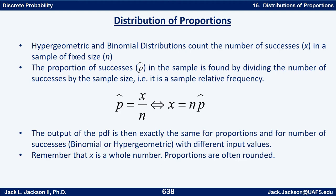The proportion of successes — we use the symbol p-hat, which is p with a little caret over it. So p-hat in the sample is found by dividing the number of successes in the sample by the sample size. It is the sample relative frequency of successes. That gives us the formula p-hat equals x over n, or solving for x: x equals n times p-hat.